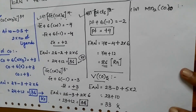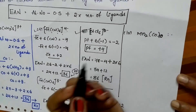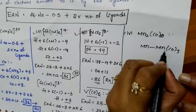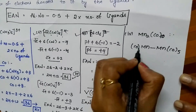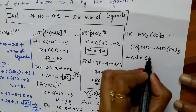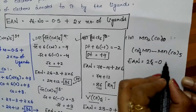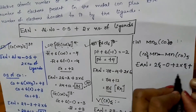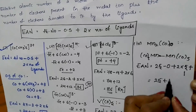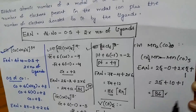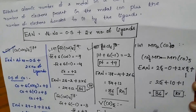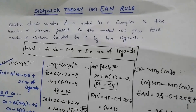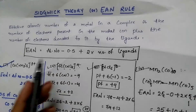Next example: Mn2(CO)10. In this structure there is one Mn–Mn metal-to-metal bond. Atomic number of manganese is 25, oxidation state in this complex is 0, number of CO ligands is 5, plus 1 electron is shared from the Mn–Mn bond. EAN = 25 + 2×5 + 1 = 25 + 10 + 1 = 36, which is the atomic number of krypton. So this complex is stable. There are a few limitations where this theory fails, but using EAN we can determine the stability of complex ions as proposed by Sidgwick.